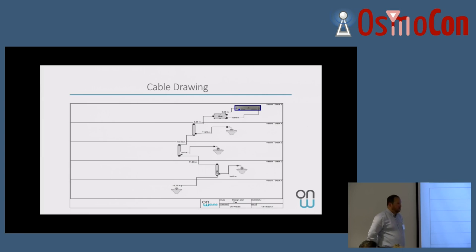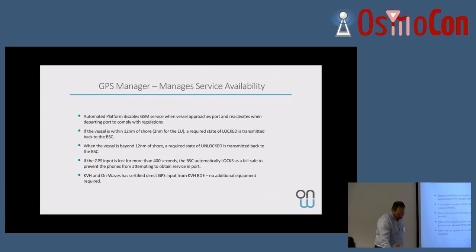And the setup there is extremely easy. We use asymmetric splitters. So, those are, depending on the splitter, we use seven to one, four to one, five to one, in order to have more or less the same output power at each antenna.